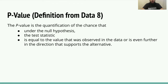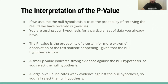Now let's define the p-value. The p-value is the quantification of the chance that, under the null hypothesis, the test statistic is equal to the value observed in the data or even further in the direction that supports the alternative. If you assume the null hypothesis is true, the probability of receiving the results you have received is the p-value. The p-value is the probability of a certain or more extreme observation of the test statistic happening given that the null hypothesis is true — we account for values even further in that direction.